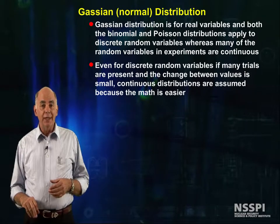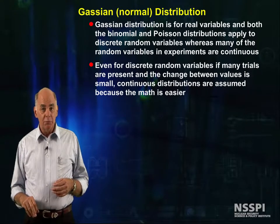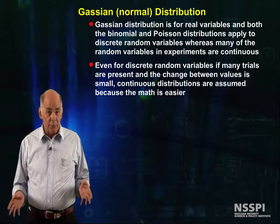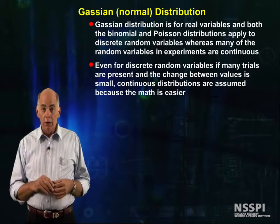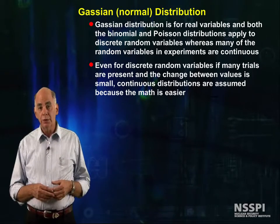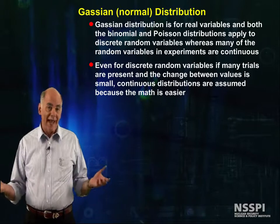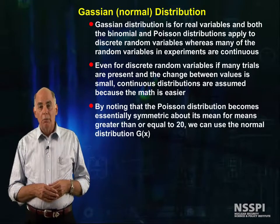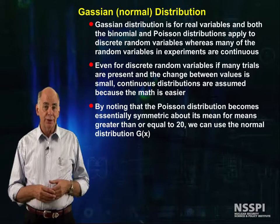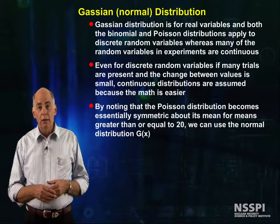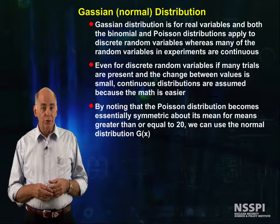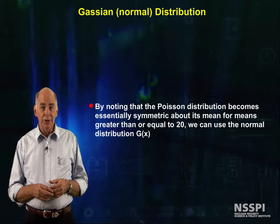As we shall see, even for discrete variables, if many trials are present and the change between values is small, continuous distributions are assumed because the math is easier. By noting that the Poisson distribution becomes essentially symmetric about its mean for means greater than or equal to 20, we can use the normal distribution, g sub x.